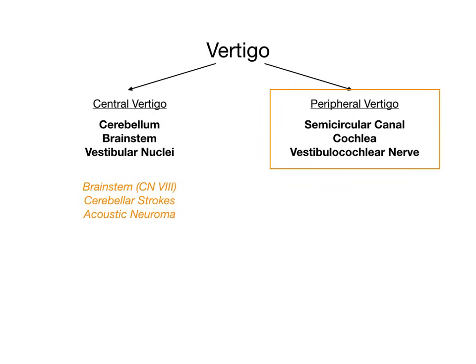Central vertigo is low yield, but one important point: an acoustic neuroma sits at the cerebellopontine angle, and if it's bilateral, it's associated with neurofibromatosis type 2. If you have vertigo, tinnitus, and bilateral acoustic neuromas, think neurofibromatosis type 2 — that'll probably be the direction the question goes on your exam.